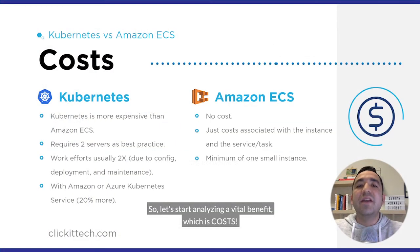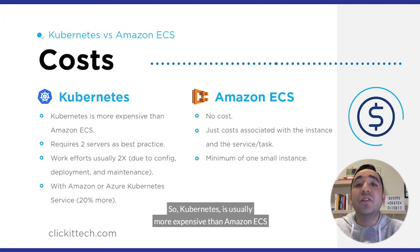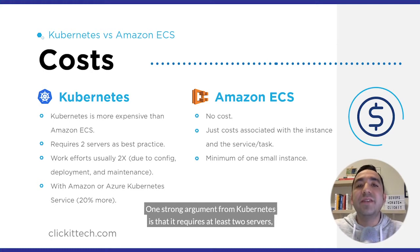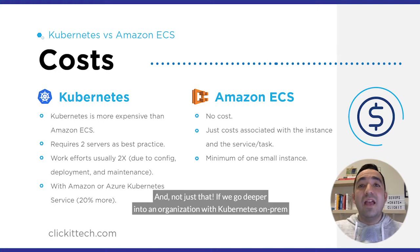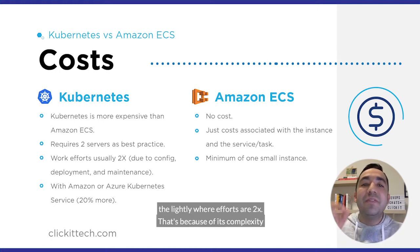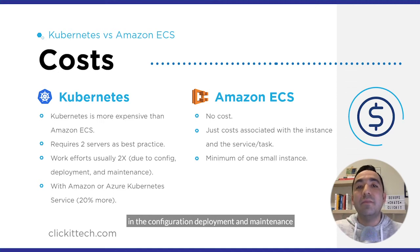Let's start analyzing a vital benefit, which is cost. Organizations aspire to reduce IT costs without compromising quality or agility. Kubernetes is usually more expensive than Amazon ECS. One strong argument is that it requires at least two servers, which will cost you a good amount of money from the hosting side. And if we go deeper into your organization with Kubernetes on-prem, the likely work efforts are 2x — because of its complexity in the configuration, deployment, and maintenance.